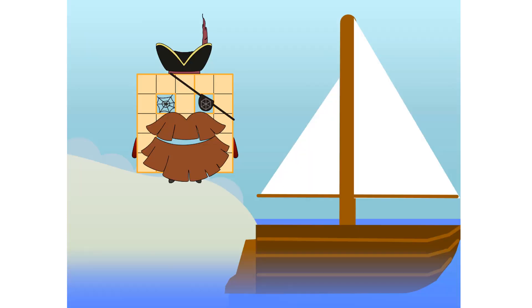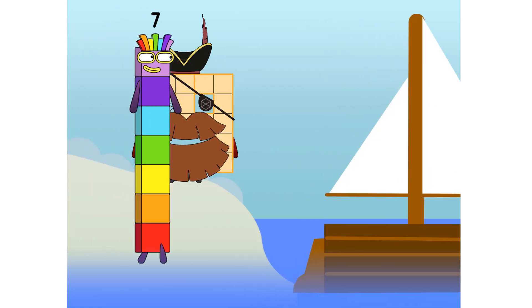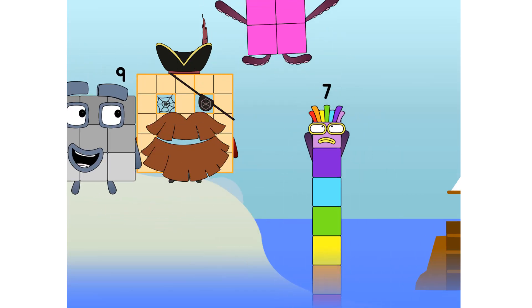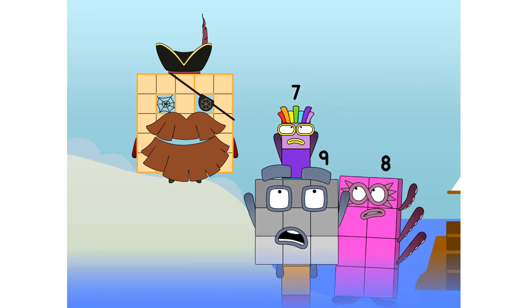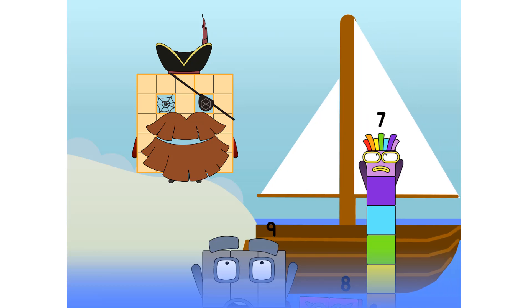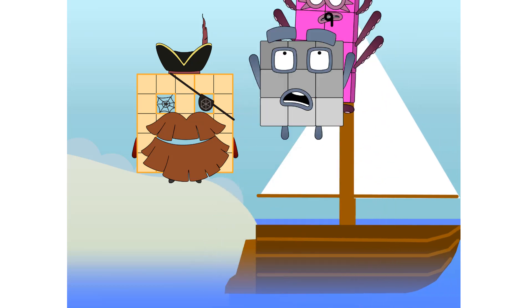All right, me hearties. Into the boat you go. I have room for 20 numbers. Number 1, 2, move along lads. 3, 4, 5, 6, 7. Step lively. 8. Smartly now. Move along, 9. Blow me down, numbers overboard. Hang on, lads. It's a good thing you know how to swim.